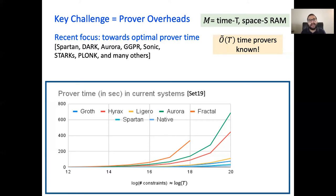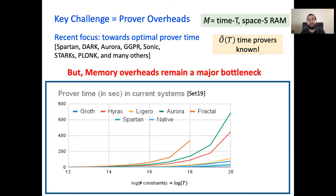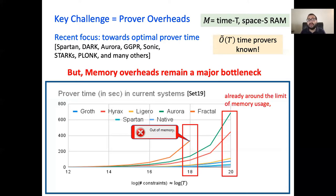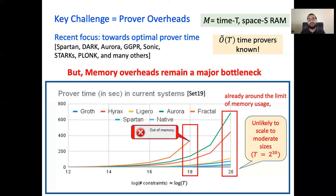So are we done? Actually, no. Although time-wise we are good, memory overheads of the prover remain a major bottleneck in current systems. In fact, Setti in his recent paper observes that the prover of the fractal system — the orange line — runs out of memory at statements of size 2 to the 18, explaining why the orange line abruptly stops midway in the graph. The state of affairs for the rest of the systems is not significantly better, as the prover is already at the limits of memory usage for statements of size 2 to the 20, and unlikely to scale to moderate sizes of 2 to the 30, necessary to handle any interesting real-world application.